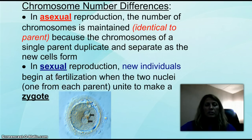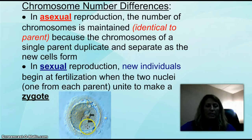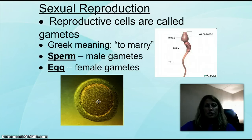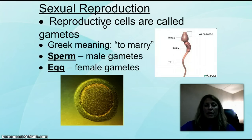In sexual reproduction, you have a new individual with two new nuclei — one from the mom and one from the dad. When you unite those two together, that is called a zygote. There are reproductive cells collectively called gametes. Do not get that confused with gonads. The gametes are the sperm and the egg — sperm for the male, egg for the female. The gonads, which we'll cover later, are the structures that hold the gametes.